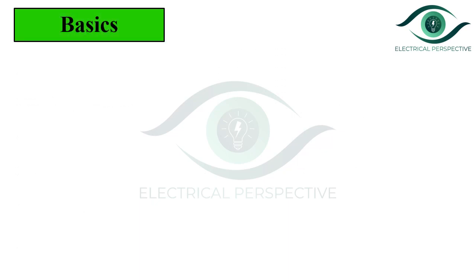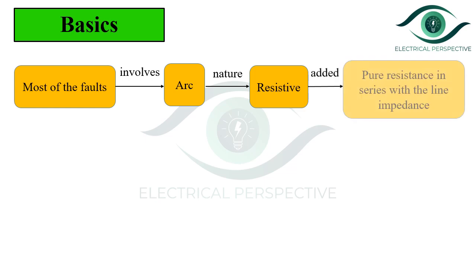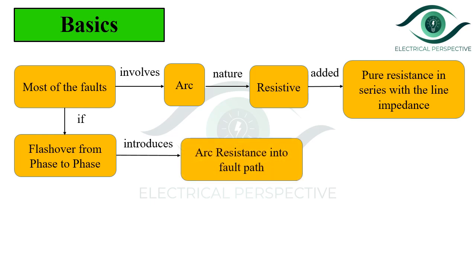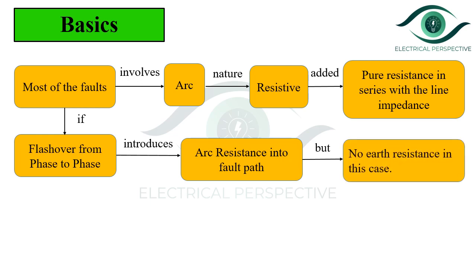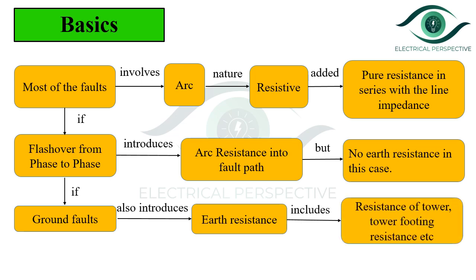Let us start with some basics. Most faults involve an arc which is resistive in nature and is added as a pure resistance in series with the line impedance. If flashover from phase to phase occurs, then it introduces arc resistance into the fault path but no earth resistance in this case. If a ground fault occurs, then it also introduces earth resistance, which involves resistance of the tower, tower footing resistance, etc.